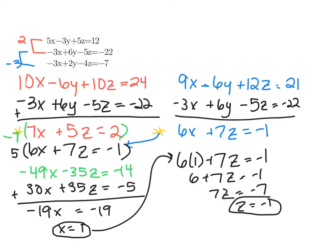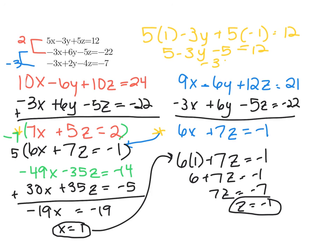Now I have two of my three variables. I'm going to take Z equals negative 1 and X equals 1, and plug them back into one of the original three equations. I'll choose the top equation: 5 times X — which is 1 — minus 3Y, plus 5 times Z — which is negative 1 — equals 12. That gives 5 minus 3Y minus 5 equals 12, so negative 3Y equals 12, which means Y equals negative 4.